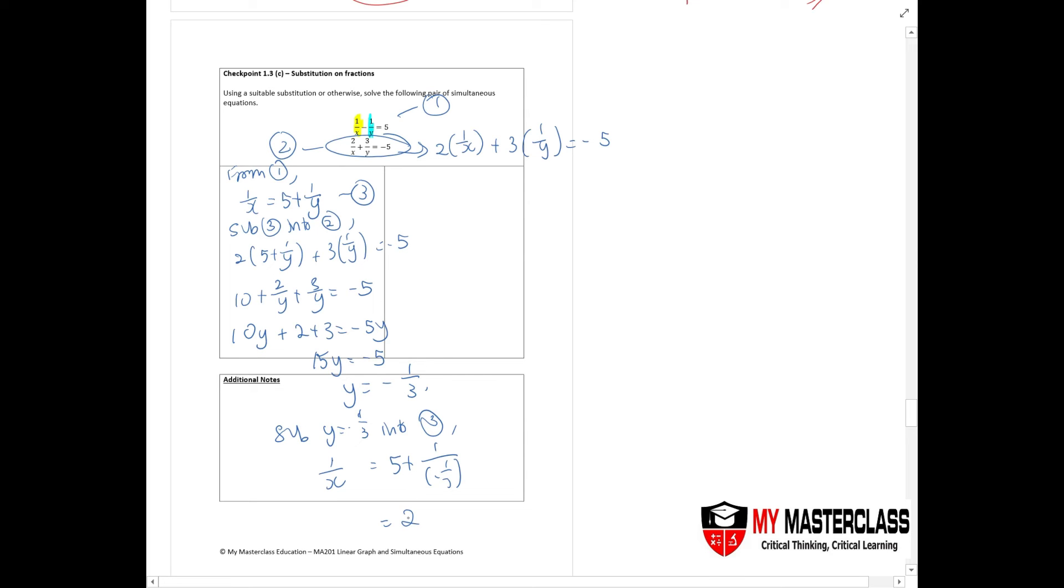Because they're asking you to solve for x and y, once you have found the answer, take cross multiply. You should get 2x = 1, so x = 1/2. Therefore your final answer would be y = -1/3 and x = 1/2.